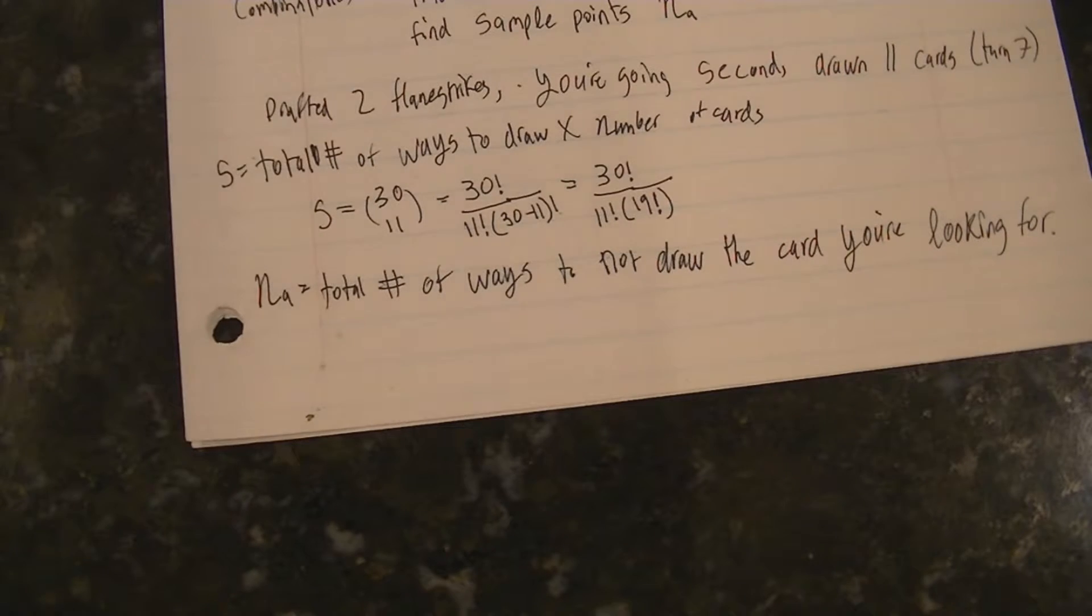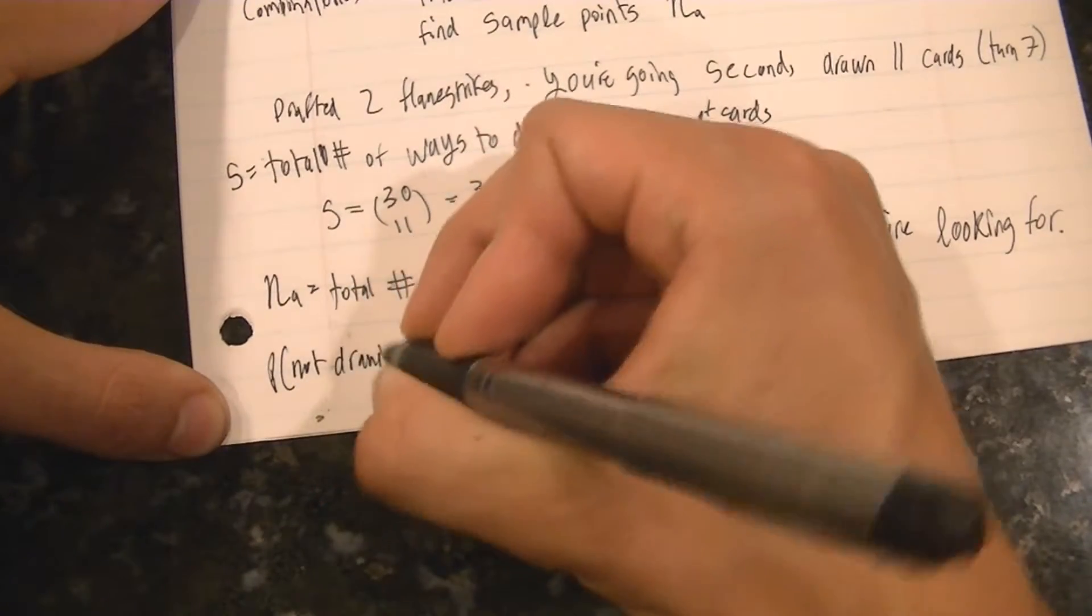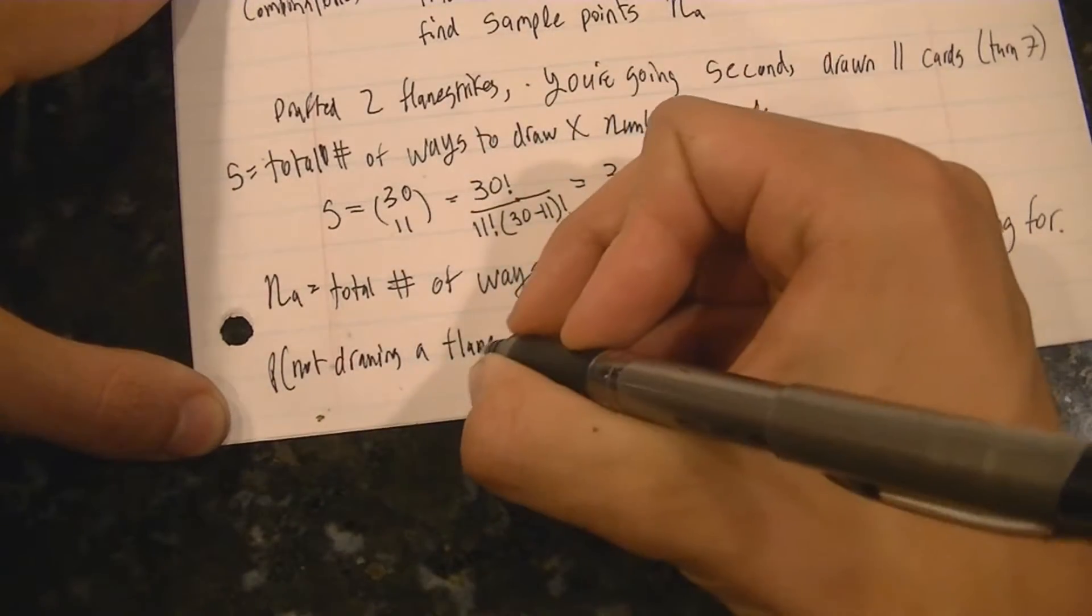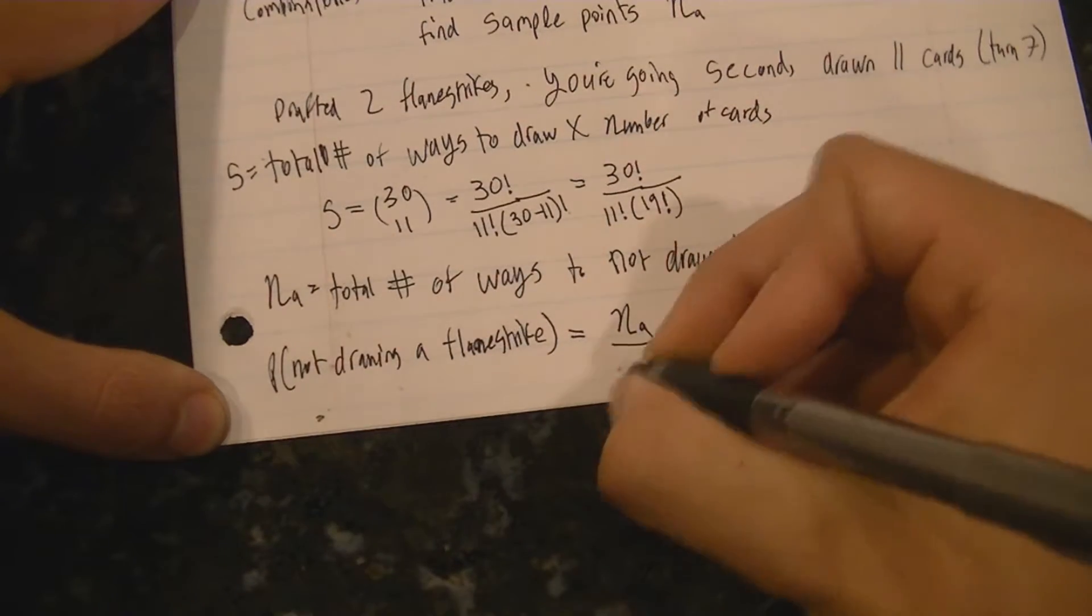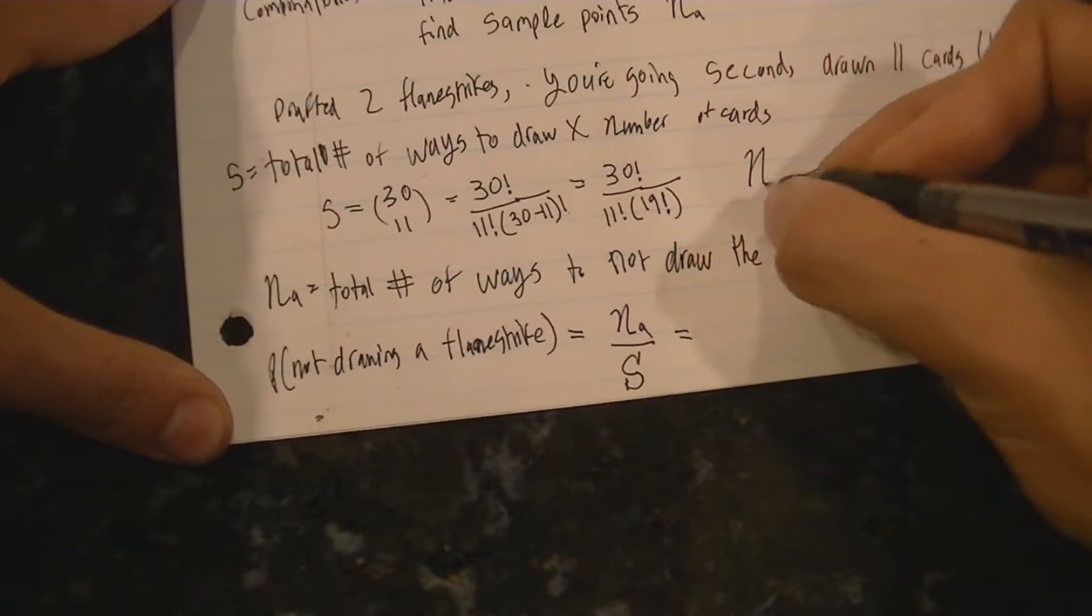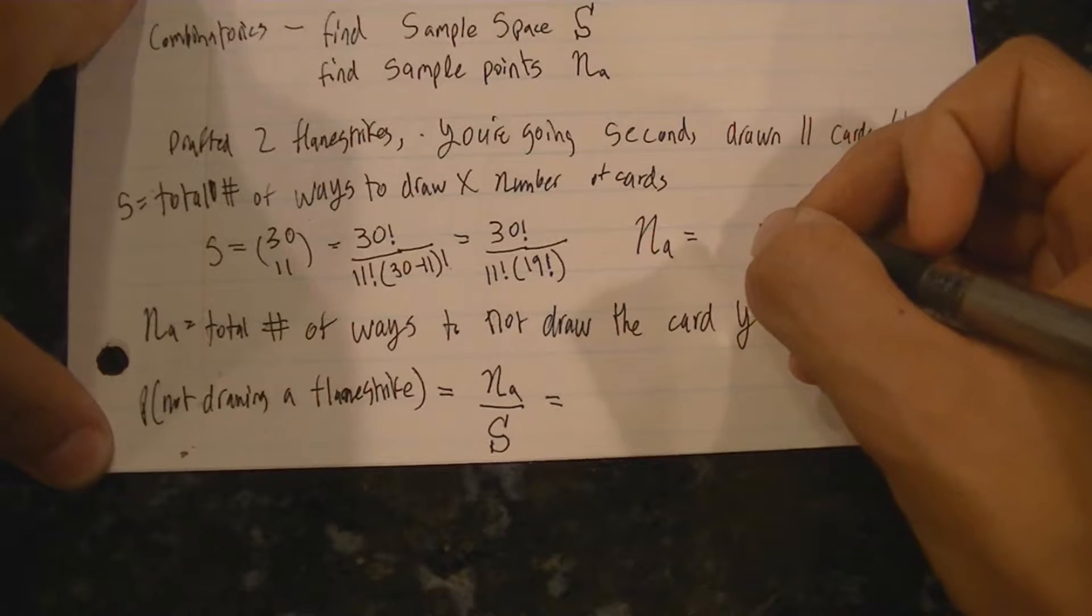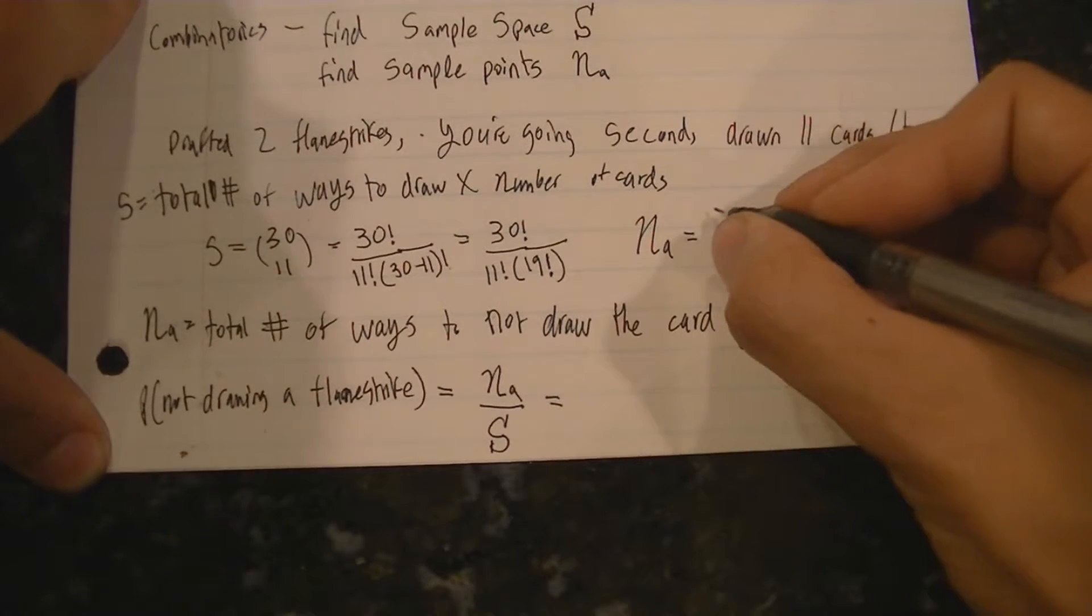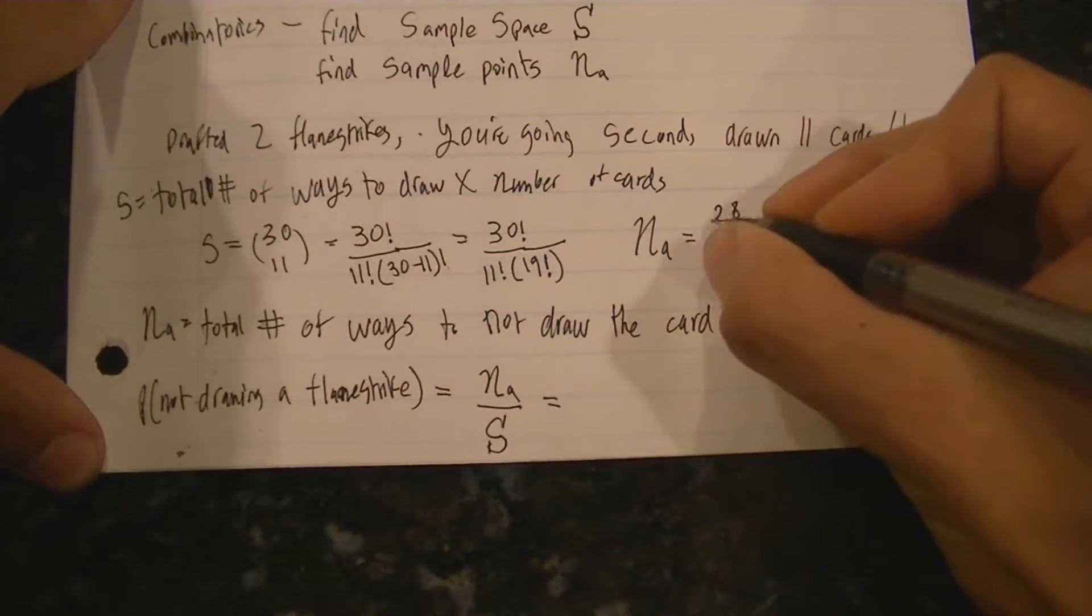That'll give you the number of ways that you can draw 11 cards without drawing a single flamestrike. And that's exactly what we're going to do. We're going to pretend we have a deck now of 28 cards without any flamestrikes and choose 11 cards from that deck and look at the number of combinations we can make of 11 cards without drawing a single flamestrike.